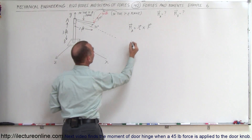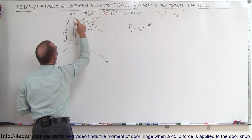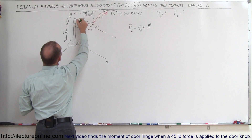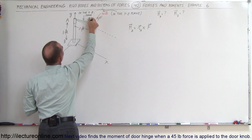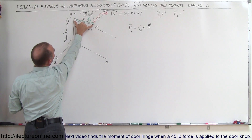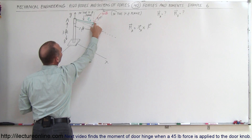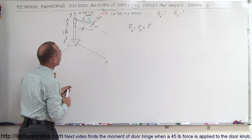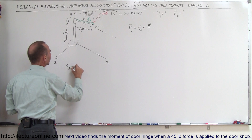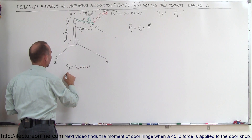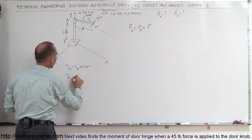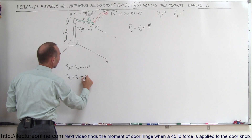Let's start with the position vector and call this R sub A, relative to A. Let's draw that vector in green — it's going to be along this beam. We know that the length here is 2 feet, so the hypotenuse is 2 feet, and we need to find the x and z components. R sub A in the x direction is equal to R sub A times the cosine of 30 degrees, and R sub A in the z direction is equal to R sub A times the sine of 30 degrees.